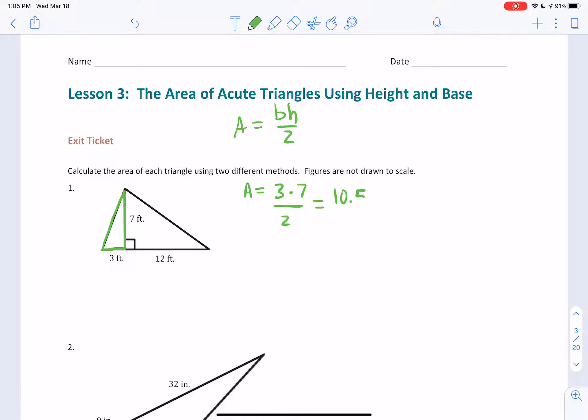3 times 7 is 21, 21 divided by 2 is 10.5. And then if I were to find the area of this purple triangle, once again, we have a right triangle, and this time, the area would be area equals base of 12, height is still 7.